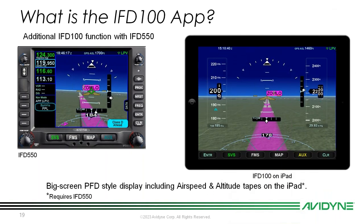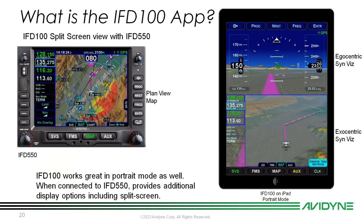IFD100 also works in portrait mode. If you have an IFD550, IFD100 will mirror or match the features of your panel-mounted IFD. So if you have a 550 with the extra synthetic vision page, you'll also get that extra SVS page on IFD100 — including the egocentric view that you wouldn't get with a 540. In portrait mode with a 550 you also get split-screen mode, so you can view egocentric synthetic vision up top and exocentric synthetic vision on the bottom, and switch between an ADI, FMS, map, or auxiliary page on the lower split.